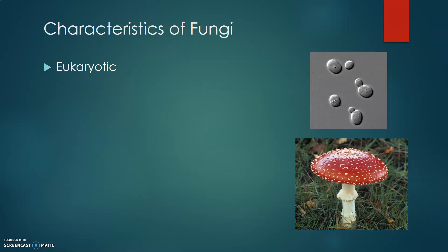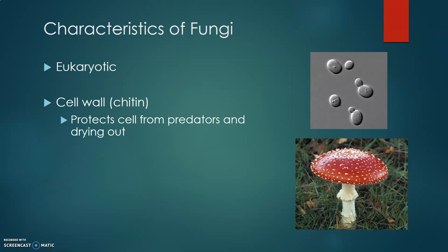All fungi share certain characteristics. The first, which we've already discussed, is that they're eukaryotic, meaning their cells have a nucleus and they have organelles. All fungi also have a cell wall that protects individual cells from predators as well as from desiccation, or drying out. That cell wall is made of a specific polysaccharide called chitin.